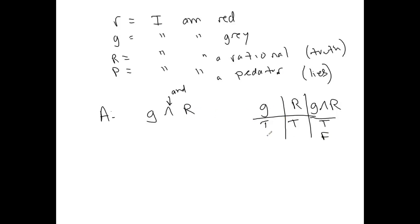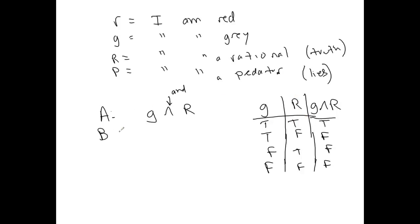It would be false in all other cases — true/false, false/true, and false/false. You can say yes or no, or true or false; they're just different ways of saying the same thing — yes/no, one/zero, etc. So this dragon would be telling the truth if he were both gray and rational.